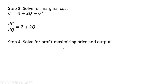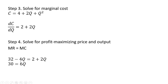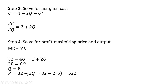Now we do profit maximization by setting marginal revenue equal to marginal cost. Marginal revenue is 32 minus 4Q, set equal to marginal cost 2 plus 2Q. Adding 4Q to both sides gives 6Q, then subtracting 2 from both sides, and dividing through by 6 — the profit maximizing output is 5 units. To get the profit maximizing price, we plug Q equals 5 into the inverse market demand, 32 minus 2Q, and get a profit maximizing price of $22 per unit.